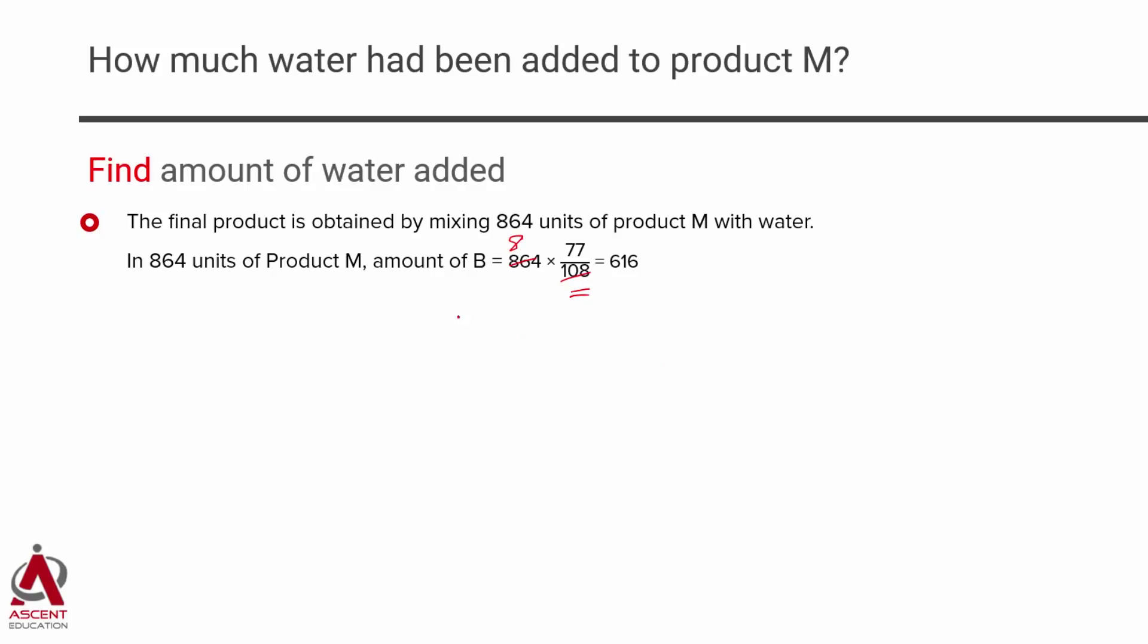So, in 864 units of product M, how much B do we have? We have 616 units of B in it, which is what we wanted to find out in the first step.